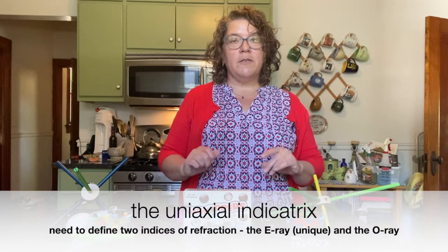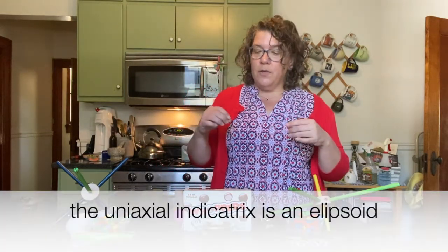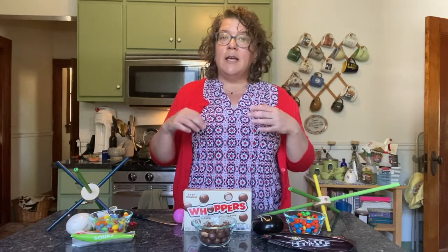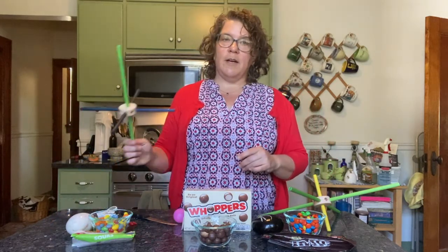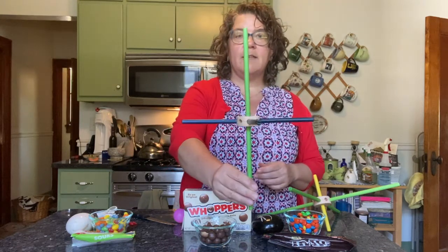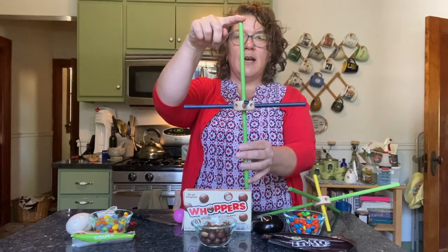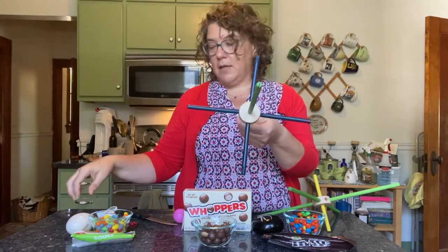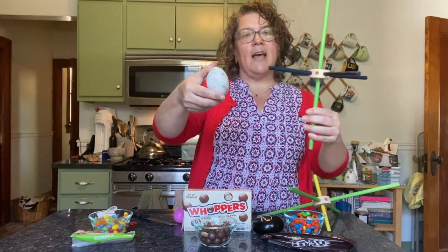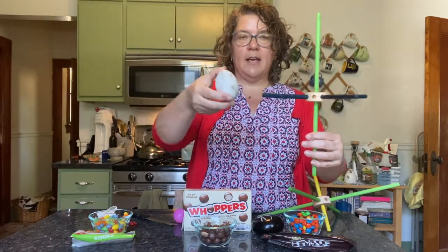Uniaxial minerals have one unique axis, and perpendicular to that they're the same. The shapes we get are called ellipsoids. If the mineral is positive, the unique axis is longer than the ordinary axis. Light vibrates perpendicular to one another. This is a positive uniaxial mineral — one long axis and two short axes — and it would look something like an egg.